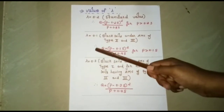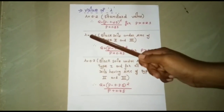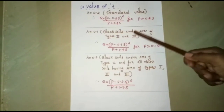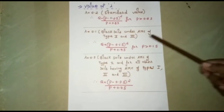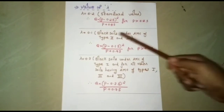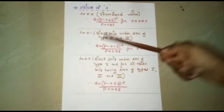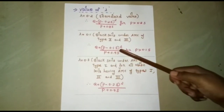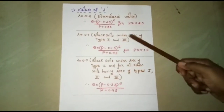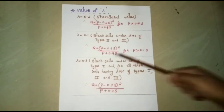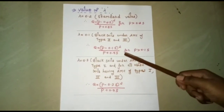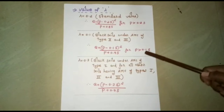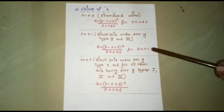The second condition uses lambda equals 0.1, applied for black soils under AMC type 2 and type 3. The equation becomes Q equals P minus 0.1S, the whole squared, divided by P plus 0.9 into S, for P greater than 0.1S.